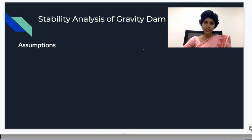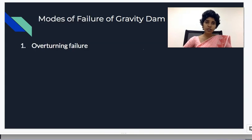We are going to discuss these methods. The next topic is modes of failure in gravity dams. The first one is overturning failure. Overturning failure occurs at the basal section.